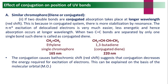Conjugation causes bathochromic shift (red shift), suggesting that conjugation decreases the energy required for excitation of the electron. The electronic π→π* transitions require less energy in conjugated systems, and this can be explained on the basis of molecular orbital theory.